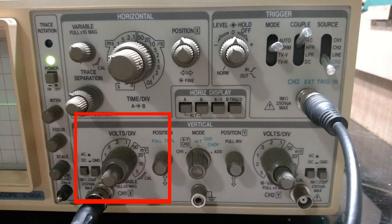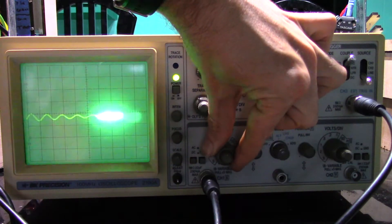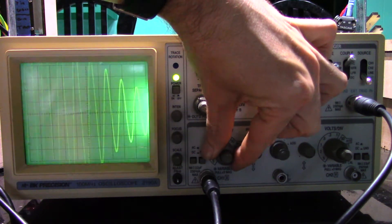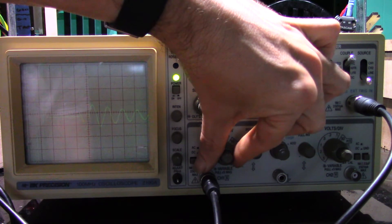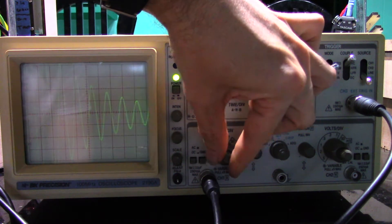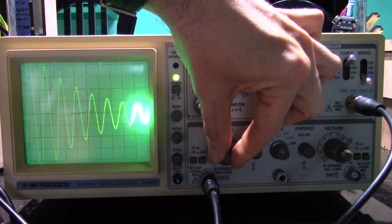This knob near where the input connects is used to control the height of the signal on the screen. Usually you adjust it so that the signal in question takes up the entire height of the screen. On most scopes there's both a coarse and fine adjustment knob and you'll end up using both to get the signal just the right height on the screen.